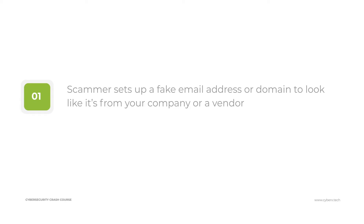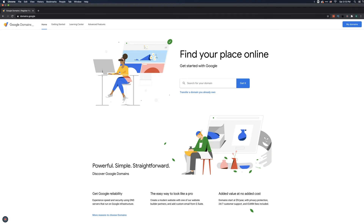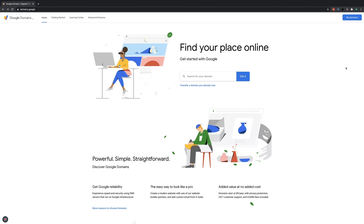To understand business email compromise, we need to understand how it works. Usually the way this is done is, first of all, the scammer will set up a fake email address or a domain to look like it's coming from your company or from a vendor that you actually deal with. It's so easy to get a domain very similar to an organization you want to target.